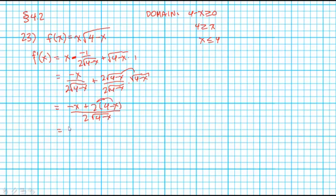Distributing this through, we get negative x plus 8 minus 2x all over 2 root 4 minus x...